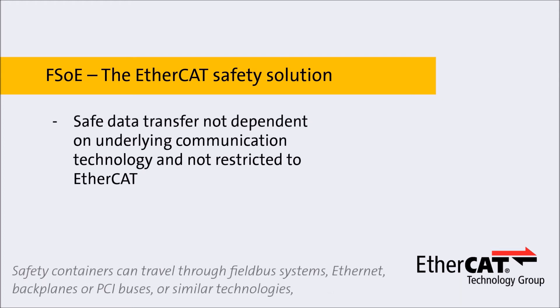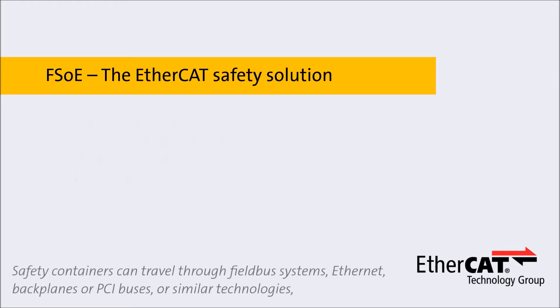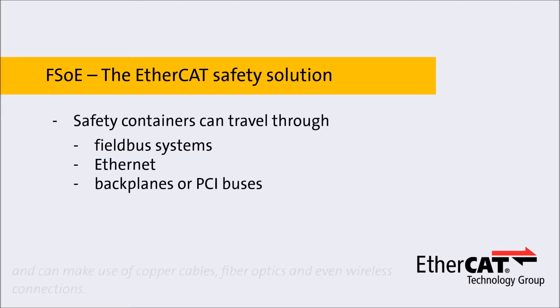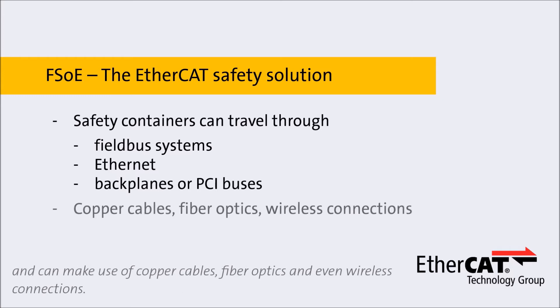Safety containers can travel through field bus systems, Ethernet, back planes or PCI buses or similar technologies, and can make use of copper cables, fiber optics and even wireless connections.